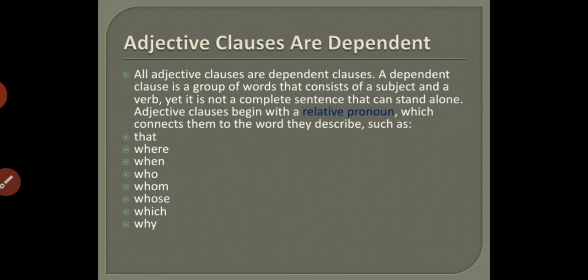All adjective clauses are dependent clauses. A dependent clause is a group of words that consists of a subject and a verb, yet it is not a complete sentence that can stand alone. So it has a subject and it has a verb too, but it is not a complete sentence and cannot stand alone. Adjective clauses begin with a relative pronoun which connects them to the word they describe, such as that, where, when, who, whom, whose, which, or why.